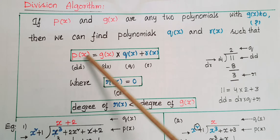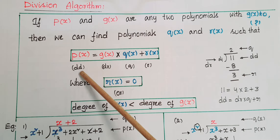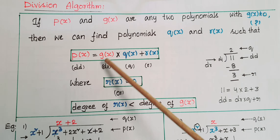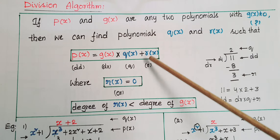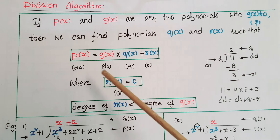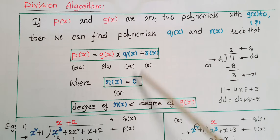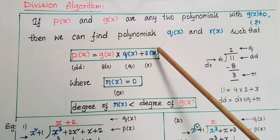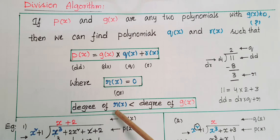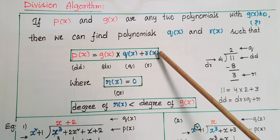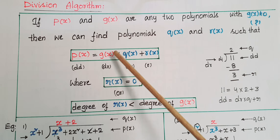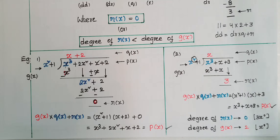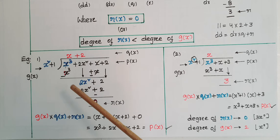Similarly in polynomials, p(x) — the dividend — equals g(x) — the divisor — times q(x) — the quotient polynomial — plus r(x) — the remainder. Here r(x) is either equal to 0, or the degree of r(x) is less than the degree of g(x). The degree of the remainder polynomial is always less than the degree of the divisor polynomial.